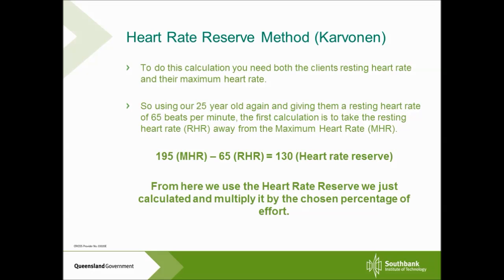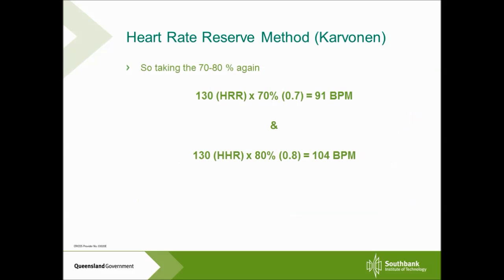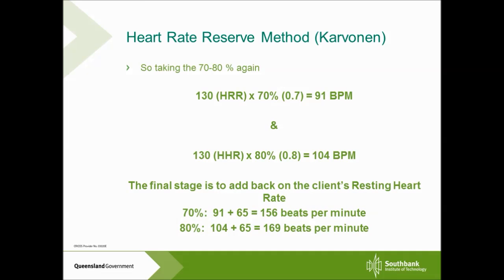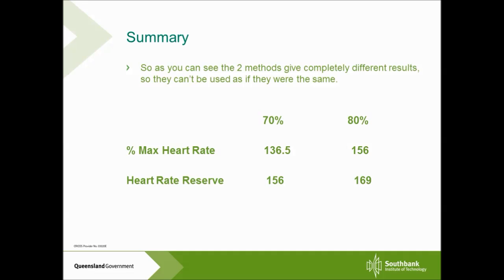We take that heart rate reserve and multiply it by the chosen percentage. Using 70 to 80 percent again: 130 multiplied by 70% gives us 91, and by 80% gives us 104 beats per minute. There is one more step — we add the resting heart rate back to these figures. For 70%, we add 65 to 91 to get a training heart rate of 156, and for 80%, 104 plus 65 gives us 169 beats per minute. So the training heart rate for this client is between 156 to 169 beats per minute.